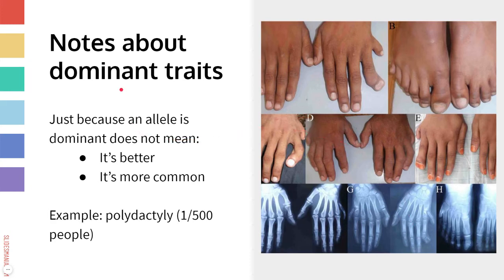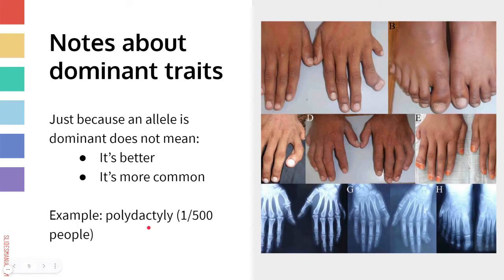Just a couple of notes about dominance and dominant traits before we move on. One thing to keep in mind is that just because an allele is dominant does not mean that it's better. And it also doesn't mean that it's particularly common — you can have recessive traits that are more common in a population than dominant traits. An example of this is polydactyly, where you have more than five fingers on your hands or more than five toes on your feet. That is actually a dominant trait, so having six fingers is dominant over having just five, but it's still rare — only about one in 500 babies are born with polydactyly.